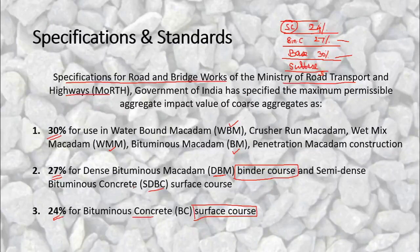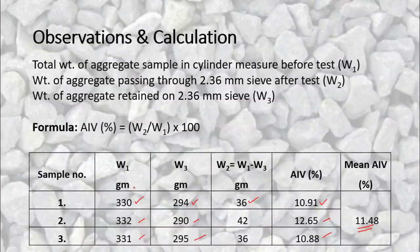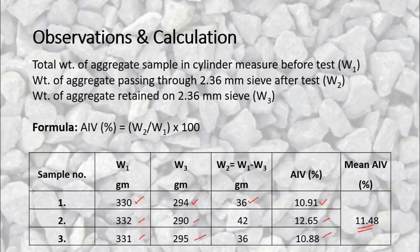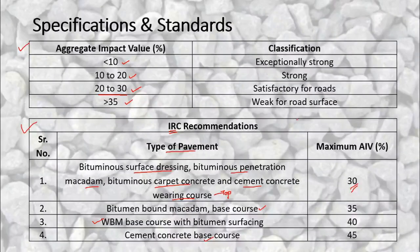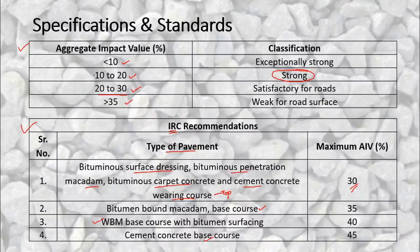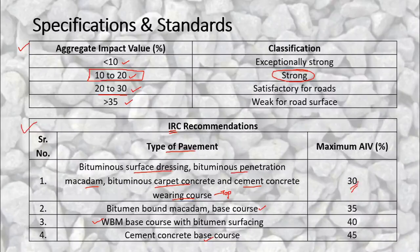Depending on the specifications and our obtained AIV of 11.48%, we can classify our aggregates as strong — because 11.48% lies in the 10–20% range and is well below 30%. Therefore, these aggregates can be used in the wearing course or topmost surface layer as per both IRC and MoRTH specifications.